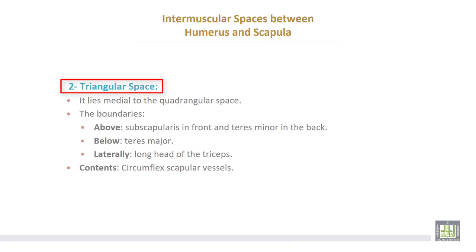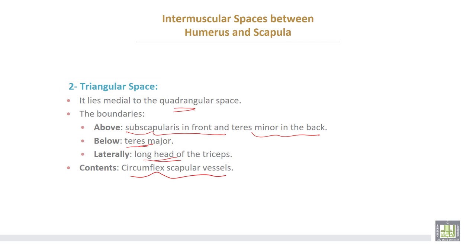The second space is the triangular space, which lies medial to the quadrangular space. It is bounded above by subscapularis from anterior and teres minor from posterior, inferiorly by teres major, and laterally by the long head of the triceps. The contents of the triangular space are the circumflex scapular vessels.